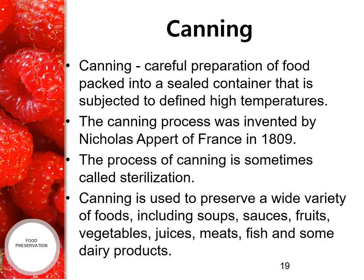Next is canning, another example of heat treatment. Canning involves the careful preparation of food packed into a sealed container that is subjected to defined high temperatures. The canning process was invented by Nicolas Appert of France in 1809. The process of canning is sometimes called sterilization. Canning is used to preserve a wide variety of foods including soups, sauces, fruits, vegetables, juices, meats, fish and some dairy products.